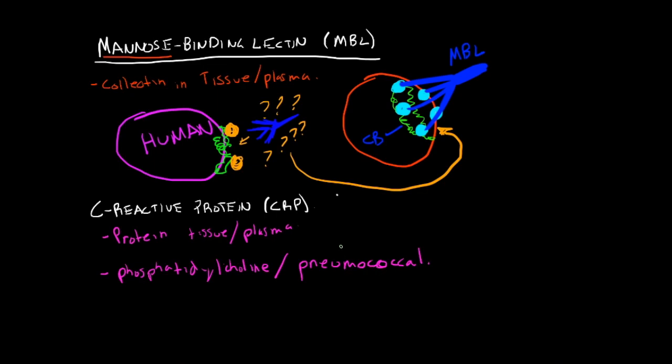But what that does is it activates the complement cascade via IgG-FC receptor binding. So an Ig molecule just looks like this, and it's going to bind the FC region. This would be the Fab region, or your variable region. This is your FC region.